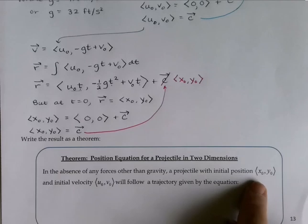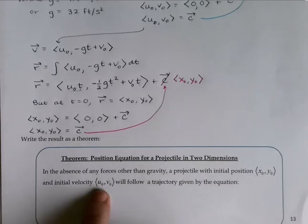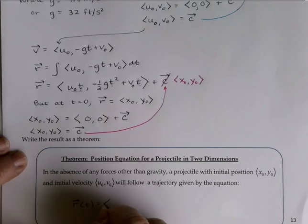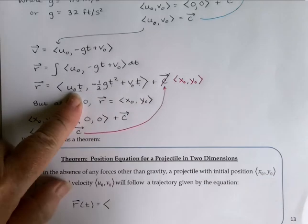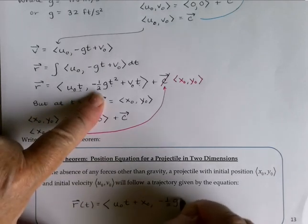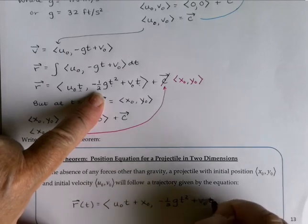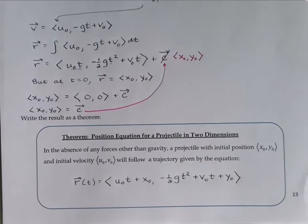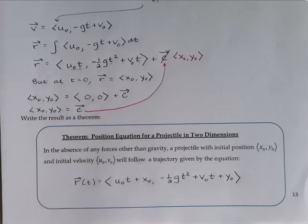Putting it all together, we get a nice equation for the position function r. When we have initial position x0, y0 and initial velocity u0, v0, the trajectory equation is r of t equals ⟨u0·t + x0, −½g·t² + v0·t + y0⟩. We can use this equation any time we have a projectile motion problem in two dimensions, specifically as long as there are no other forces acting other than gravity once the object leaves your hand. We'll come back in the next video and do a few examples.